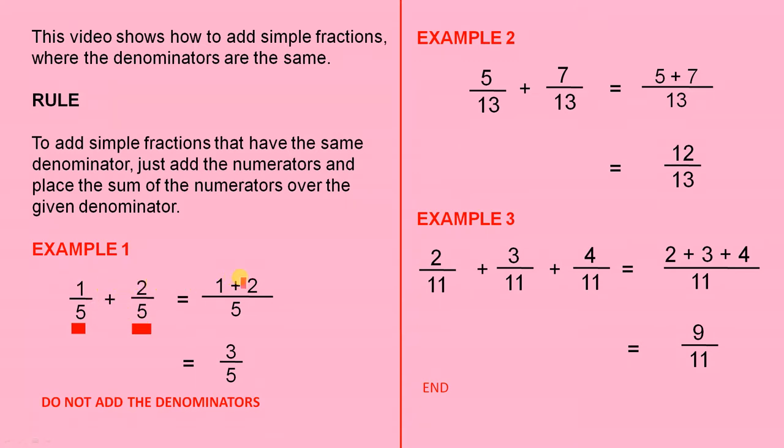So we have 1 plus 2 and we place it over the given denominator. There it is there. 1 plus 2 gives you 3. So the answer is 3 over 5.